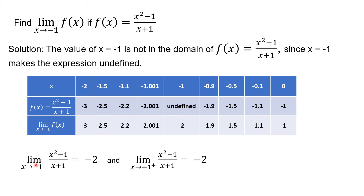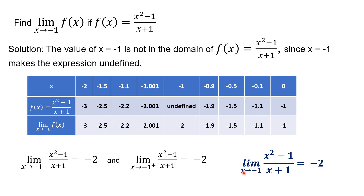So the limit of (x squared minus 1) all over (x plus 1) as x approaches negative 1 from the left is negative 2. And the limit from the right side is also negative 2. Therefore, the limit exists for this function as x approaches negative 1, and that limit is negative 2. Whether coming from the left or from the right, the limit is negative 2.